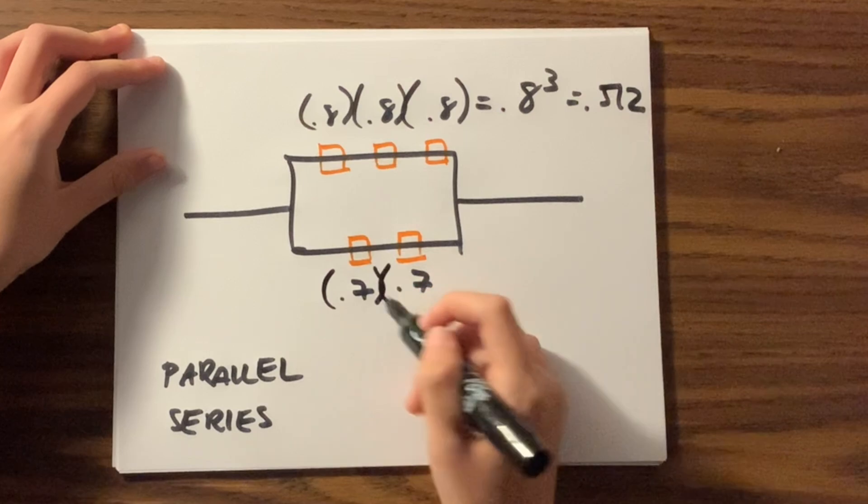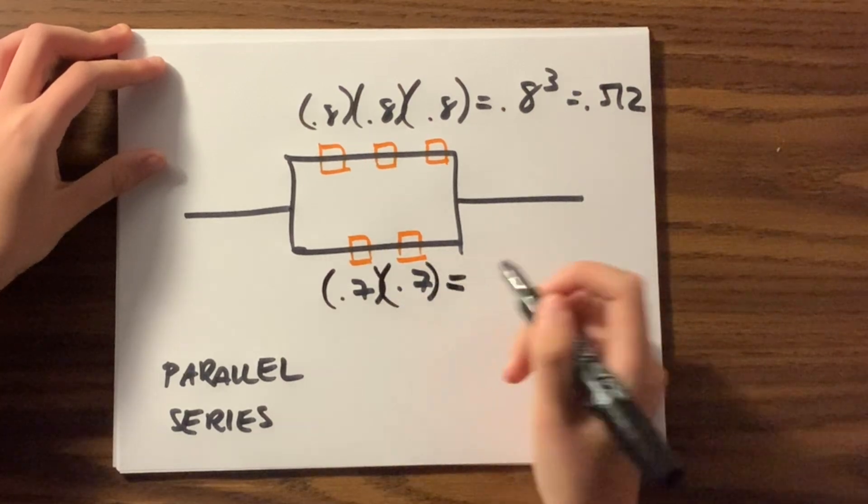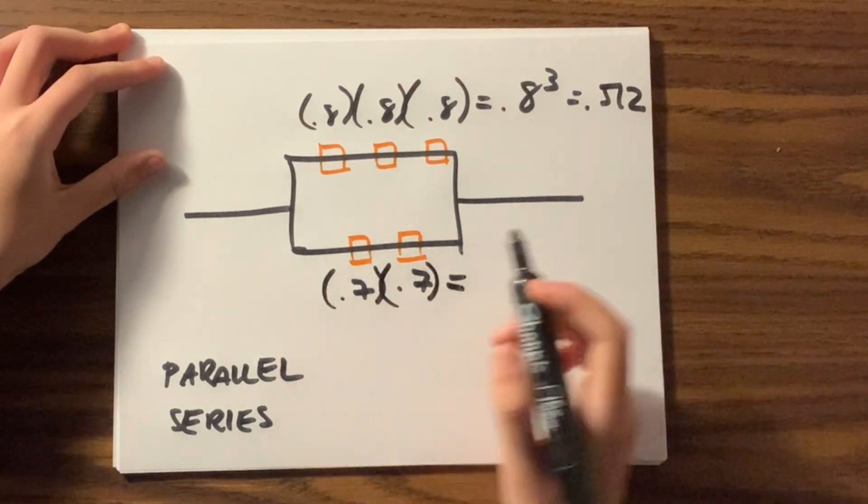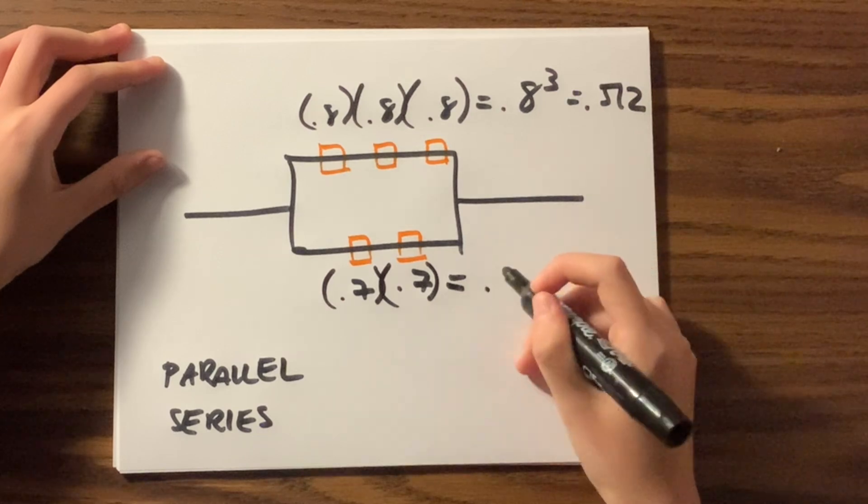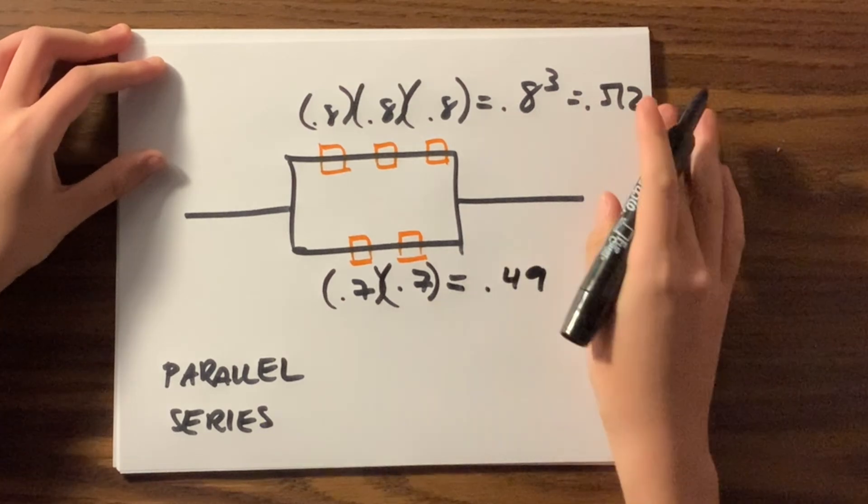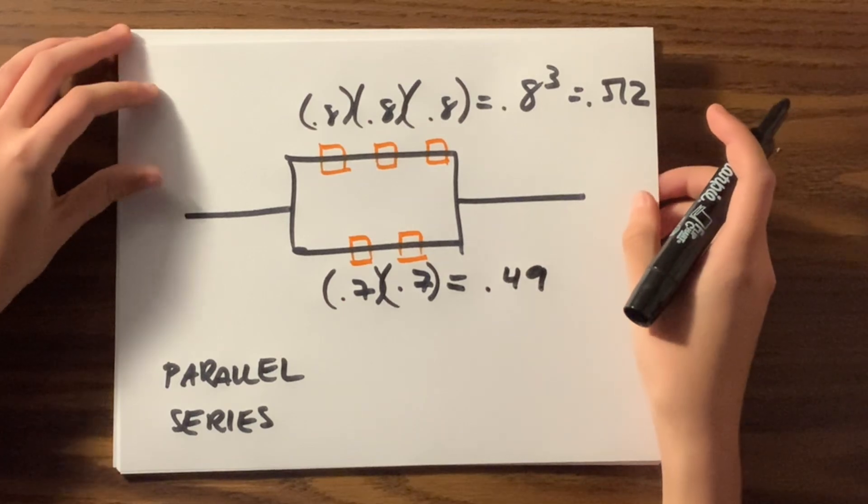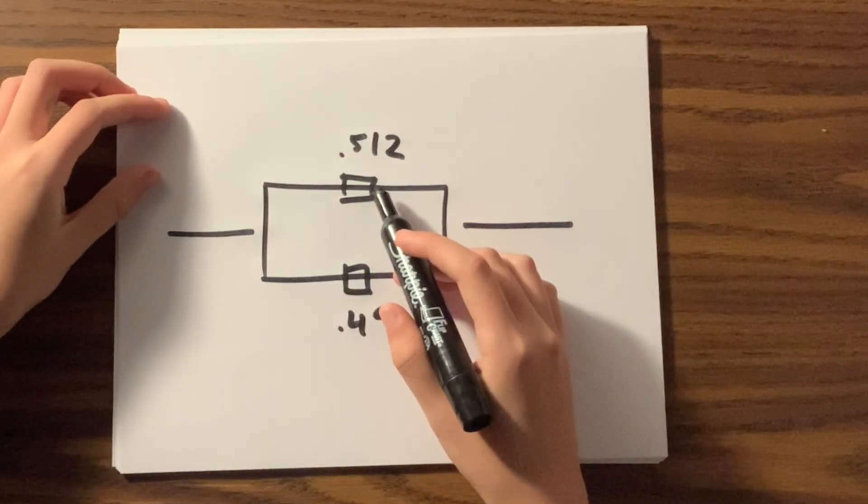We can also do the same for down here and multiply these two together and say that the probability of this series occurring is 0.49.